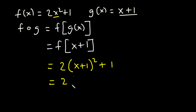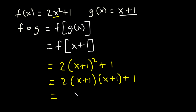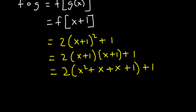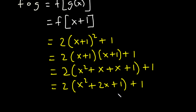(x + 1)² is equal to (x + 1)(x + 1). Now x times x is x², x times 1 is x, 1 times x is x, and then 1 times 1 is 1. So we have x² + x + x, which is x² + 2x + 1.